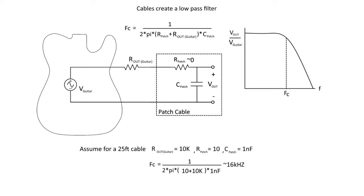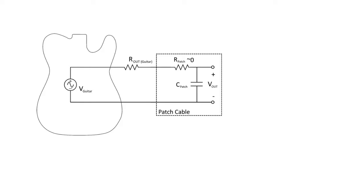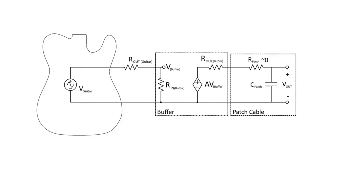So let's take that off now and let's add in our buffer. So now we have a buffer in line prior to the patch cable. So essentially, what we're thinking here is a short cable to a buffer and then run our long 25-foot cable to our amp or to our pedals. So again, our output guitar resistance is going to interact with our input buffer resistance to get V_buffer. And then V_buffer is going to essentially interact with the output resistance of the buffer and then the low-pass filter caused by the patch cable.